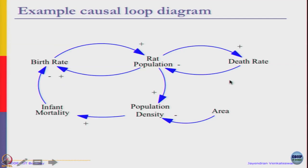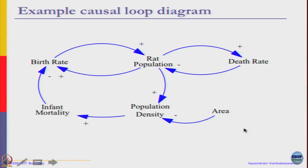This is an example of a simple causal loop diagram using rat population. The rat population is affected by the birth rate and also the death rate. Population affects the birth rate, and the birth rate also affects the population. In this example, the population also affects density — the area is assumed to be external, meaning you do not have any control and rats cannot migrate. Density influences mortality, which affects the birth rate. These kinds of diagrams are helpful to understand what the variables in the system are and how they are linked to each other, with no equations in the model as of now.